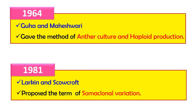In 1981, Larkin and Scowcroft proposed the term somaclonal variation. Somaclonal variations are the variations shown by plants which are produced from plant tissue culture. In simple words, these are the variations shown by plants that are themselves produced by plant tissue culture.